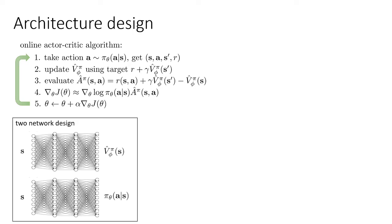There are a couple of choices we could make. One very reasonable starting choice — and this is the one I would recommend if you're just getting started — is to have two completely separate networks. You have one network that maps a state to the value, and then another completely separate network that maps that same state to the distribution over actions. These networks have nothing in common. This is a convenient choice because it's relatively simple to implement and tends to be fairly stable to train. The downside is it may be regarded as somewhat inefficient because there's no sharing of features between the actor and critic.